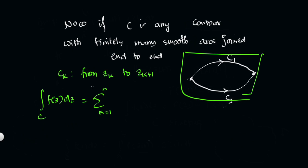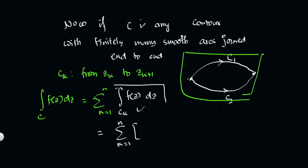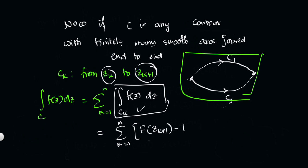In the generalized structure, the contour integral of f(z) dz over C equals the summation from K=1 to N of the contour integral over CK of f(z) dz. Applying the result from the smooth arc case to each CK — going from z_K to z_{K+1} — we get the summation of F(z_{K+1}) minus F(z_K) for K from 1 to N.